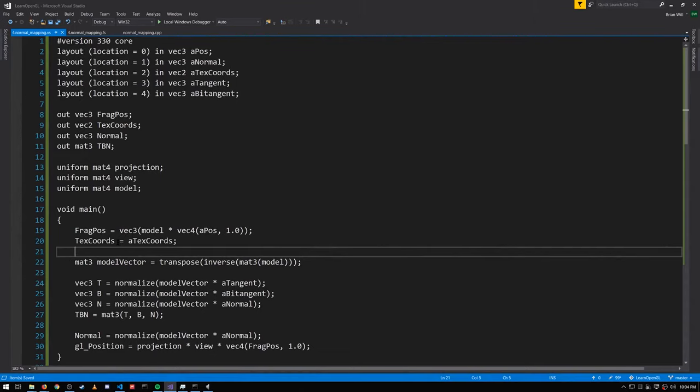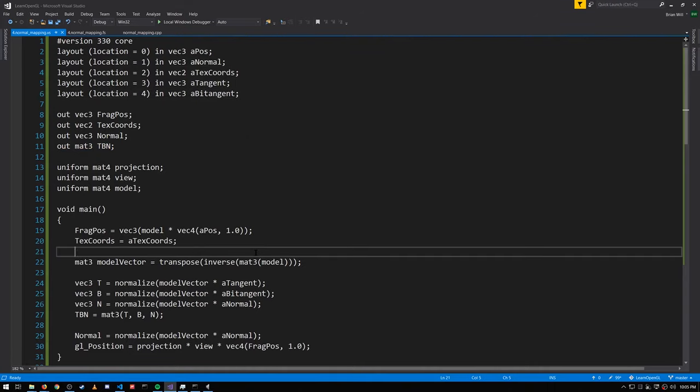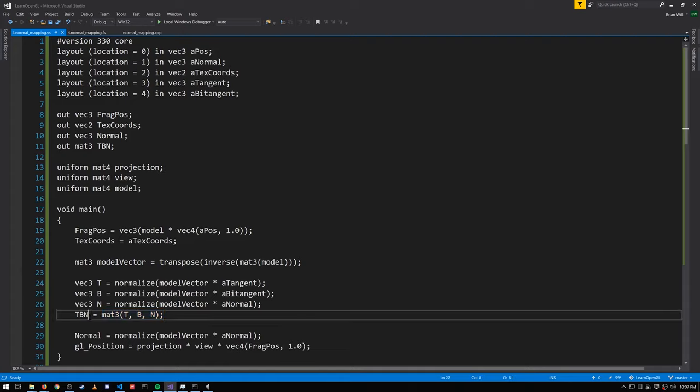So what we'll want to do in the vertex shader is output a so-called TBN matrix that we can then use in the fragment shader. We're taking in the normal, tangent, and bitangent as input to the vertex shader. They need to get transformed into world space. So to transform vectors from local space into world space, as we've seen before, we take our model matrix, reduce it down to a mat3 to effectively strip out any translation. And to properly handle non-uniform scaling, we have to apply transpose and inverse, getting us this model vector, which we then apply onto our tangent, bitangent, and normal, normalizing each of them. And then we can just plug them into a 3x3 matrix, which we call TBN. Note also here we're outputting the vertex normal, but that's only used when we toggle off normal mapping. If we're doing normal mapping, we only need TBN.